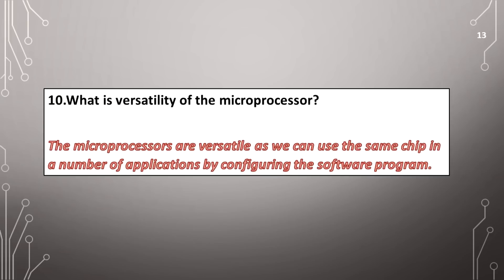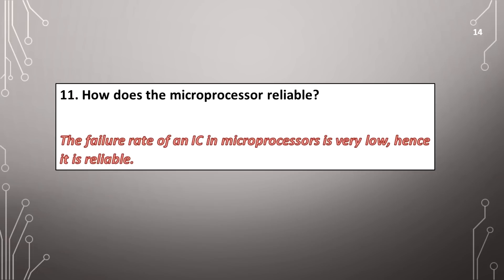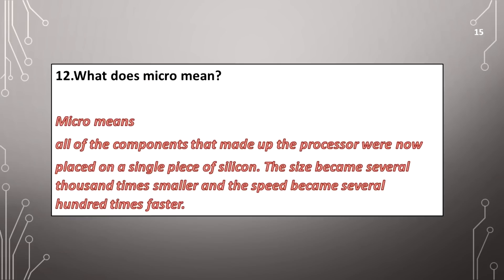What is the versatility of the microprocessor? Microprocessors are versatile as we can use the same chip in a number of applications by configuring the software program. How is the microprocessor reliable? The failure rate of an IC in microprocessors is very low, hence it is reliable. Micro means all of the components that made up the processor were now placed on a single piece of silicon; the size became several thousand times smaller and the speed became several hundred times faster.